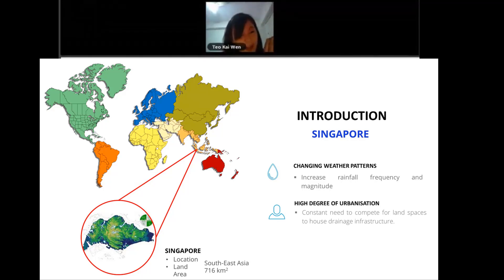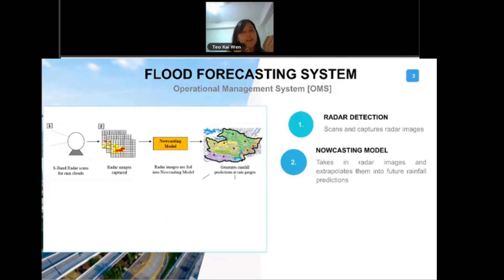Apart from that, there is also high degree of urbanization. We are constantly competing for land spaces to house our drainage infrastructure. Singapore is very small, so we need to put in all the infrastructures, houses, and all that. There's always a constant need to compete with drainage infrastructures. We recognize that flood forecasting is very important. We need to start moving towards very adaptive non-structural measures as we move to the future.